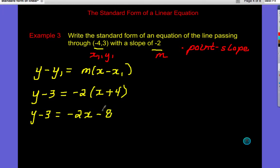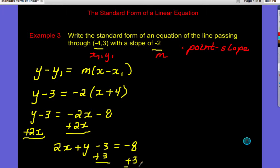Remember, Standard Form, X and Y are both on the same side, so I'll go ahead and add 2X to both sides. And so then I have 2X plus Y minus 3 equals negative 8. So if I go ahead and add 3 to both sides, I have 2X plus Y, and then negative 8 plus 3 is negative 5. So there is my Standard Form. So now this is saying you can go from Point Slope into Standard Form as well.